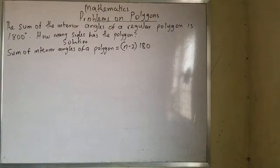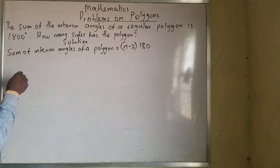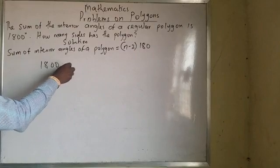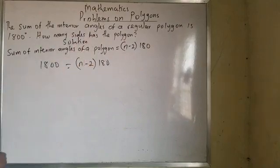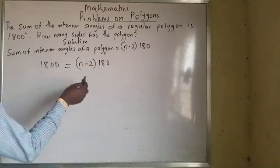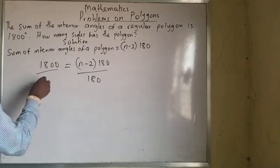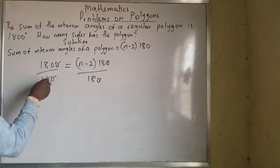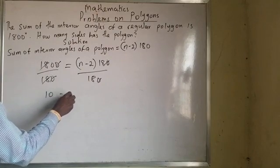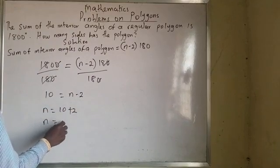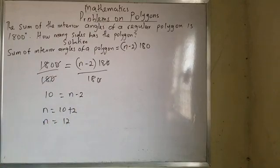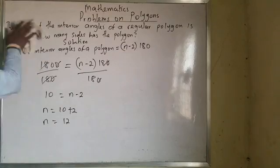The sum is 1800, so 1800 equals (n minus 2) times 180. Divide both sides by 180 — this cancels, giving 10 equals n minus 2. Therefore n equals 10 plus 2, which is 12. My n is 12. Can you see? It's very very simple.